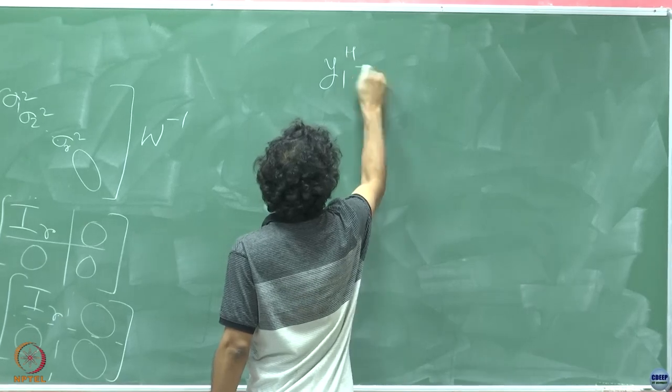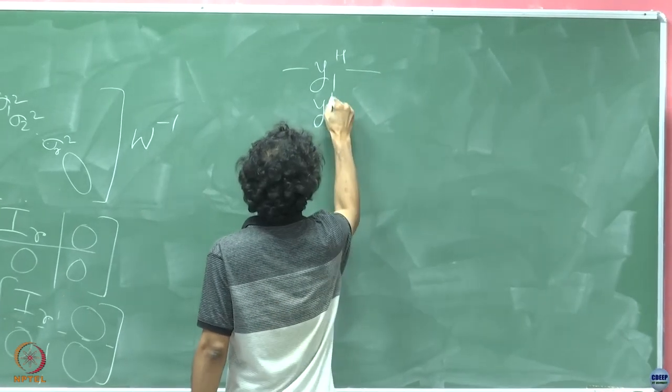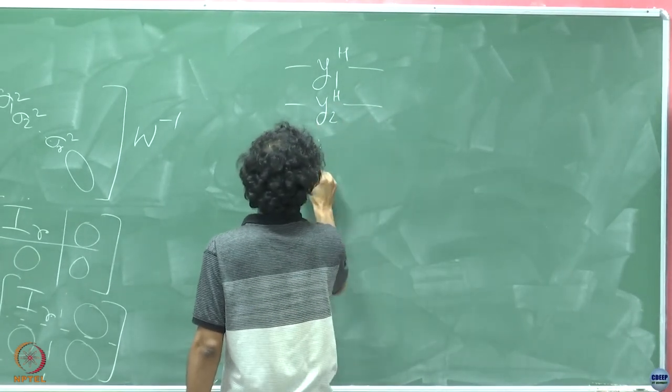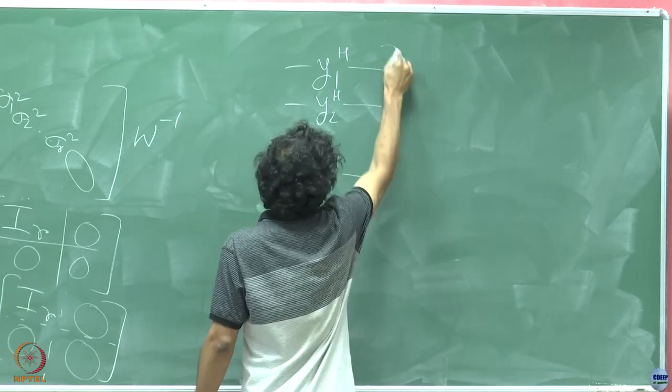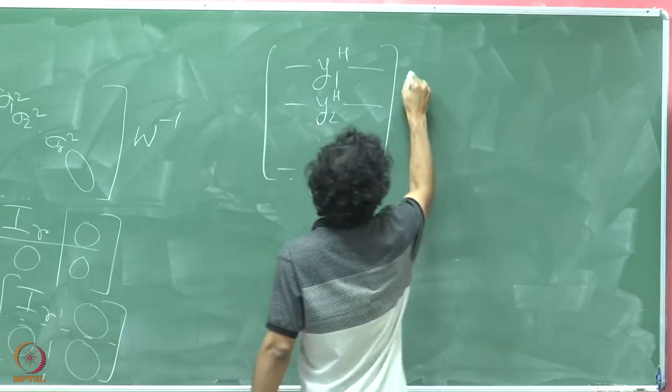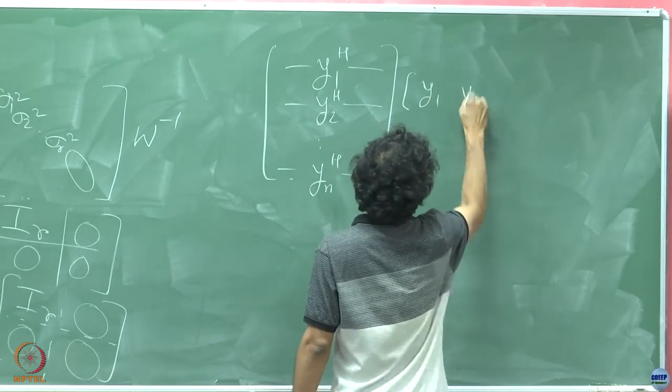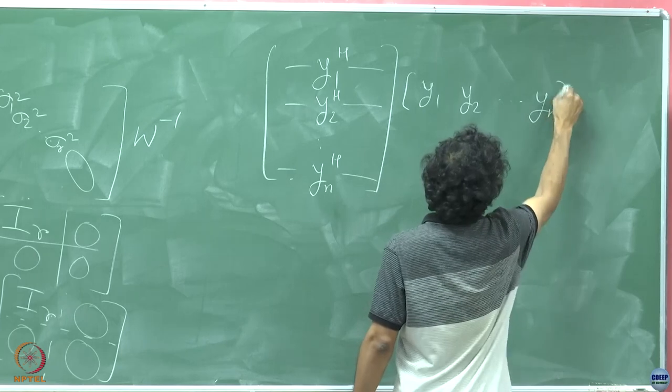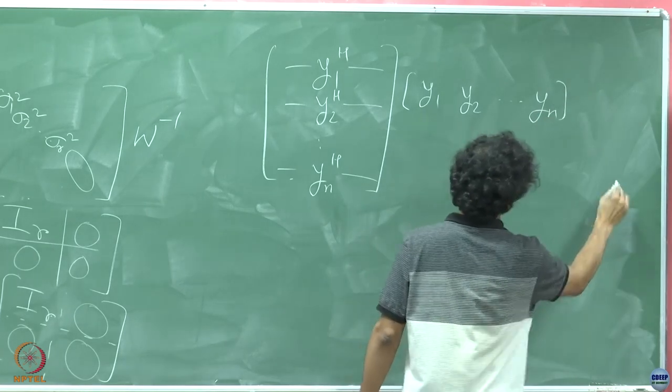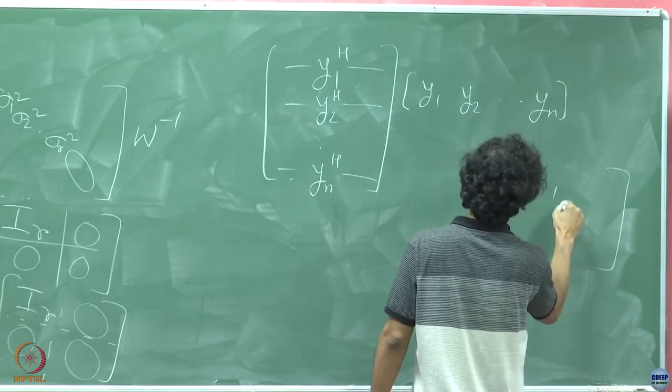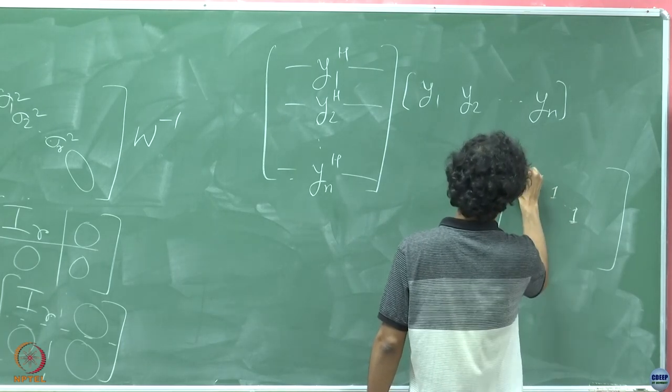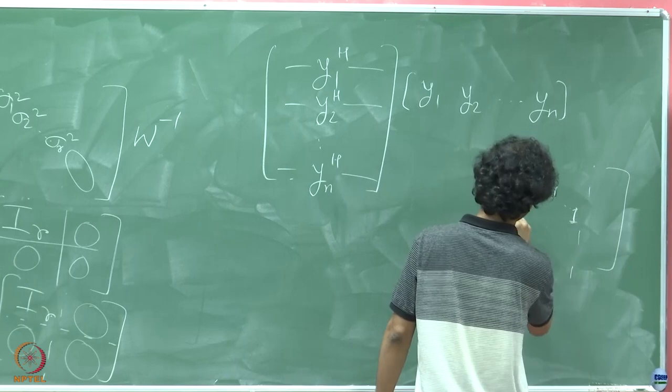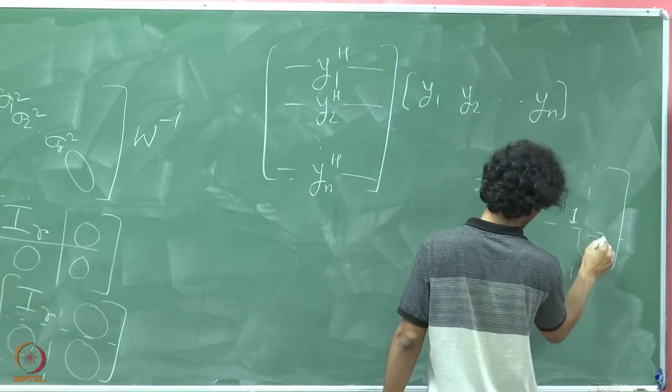y1 Hermitian, y2 Hermitian till yn Hermitian times y1, y2, yn is equal to 1, 1, 1, 1 until the first r entries, rest are all 0s.